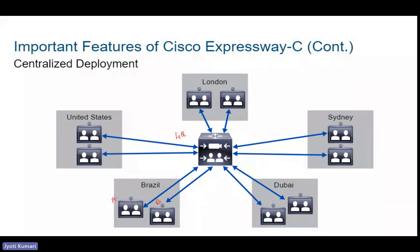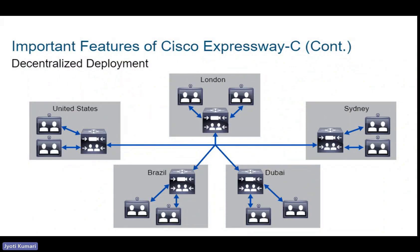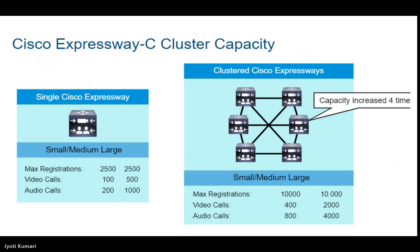In decentralized deployment, it is distributed — not all devices register to a central Expressway. Instead, we have separate Expressway servers on each site. In this distributed architecture, local call signaling goes only to the local Expressway, which reduces WAN traffic. Only calls made between different countries or regions travel across the WAN, not all calls.